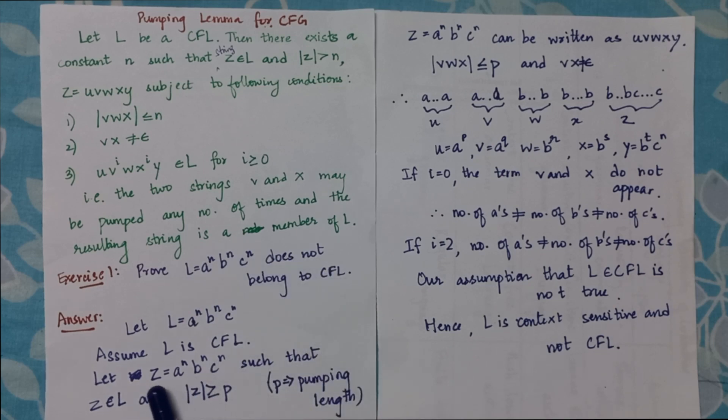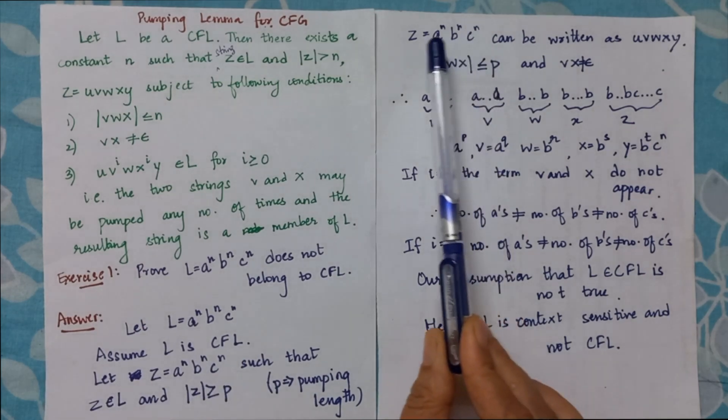I take a word: let the word be a^n b^n c^n such that z belongs to L. That is, I initially assume that the language is a CFL language and the word belongs to the language.